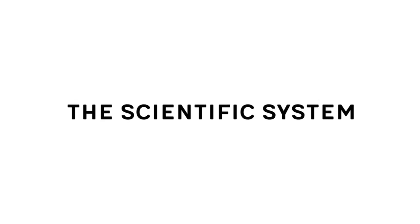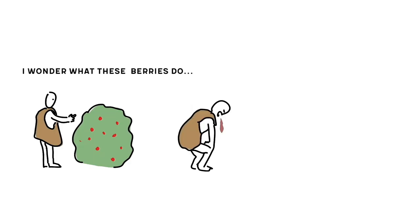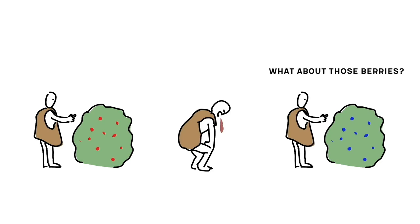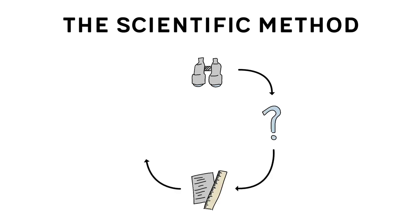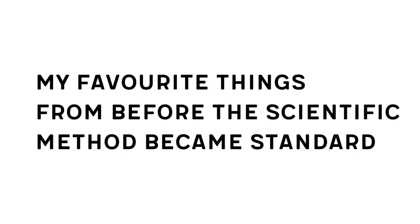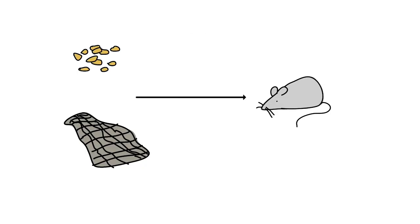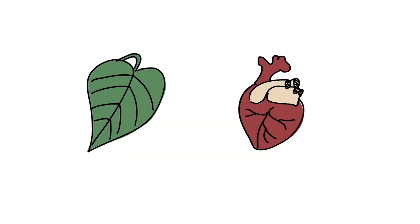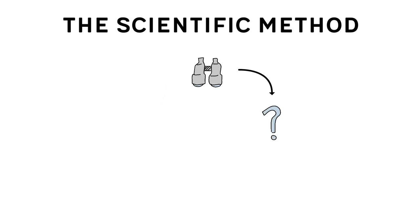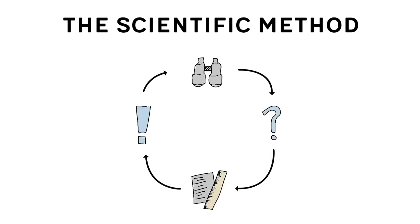Let's begin with the scientific system. We don't just do science — we do science systematically. Since the first people tried to understand the world around them, we have developed a complex system for science. At the core of that is the scientific method, which gives us a structure and tools to do science. Without it, we end up in the realm of guesswork, anecdotes, and false conclusions. Here are some things that were believed before the scientific method became standard: gentlemen could not transmit disease, mice are created from grain and cloth, blood is exclusively produced by the liver, and heart-shaped plants are good for the heart. But thanks to the scientific method, we have a system that allows us to make confident judgments on our observations.